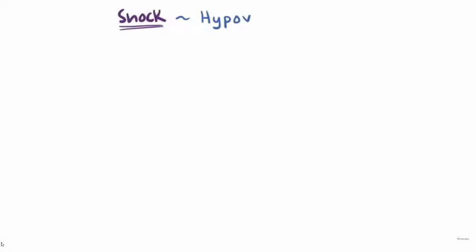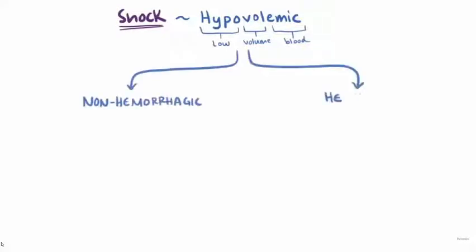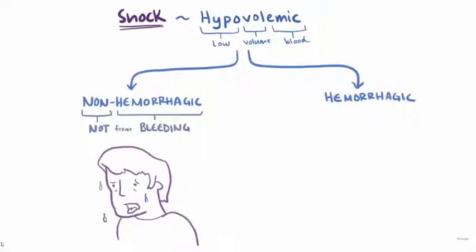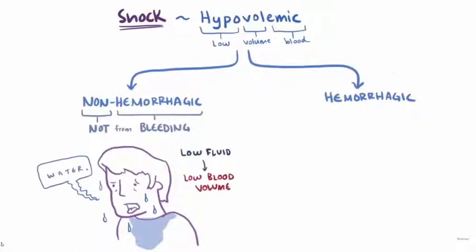The first category is hypovolemic shock. Hypo means low, vol refers to volume, and emia refers to the blood. Hypovolemic shock is induced by a low fluid volume of blood, and can be either non-hemorrhagic or hemorrhagic. Non-hemorrhagic means fluid volume loss is not from bleeding — for example, severe dehydration from fluid loss in sweat could reduce blood volume enough to develop hypovolemic shock.